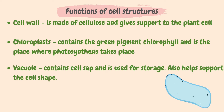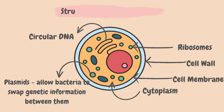Now we look at the structure of the bacterial cell. As you can see, some of these organelles are similar to those in the animal cell. However, a bacterial cell has circular DNA and plasmids. A plasmid is a small circular DNA molecule which allows bacteria to swap genetic information between them.